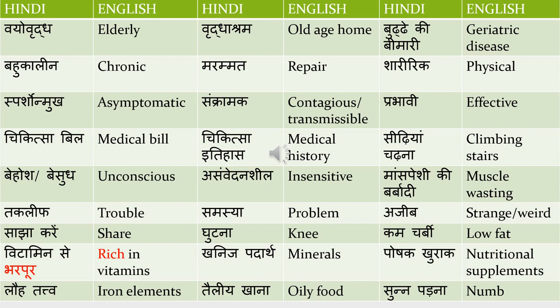Ghutna means knee. Kam charbi means low fat — charbi means fat, so low fat is kam charbi. In videos where you are talking about cholesterol levels, you might say 'Cholesterol ki matra aapke sharir mein zyada hai, aapko kam charbi ka maas khana chahiye' — meaning low fat meat.